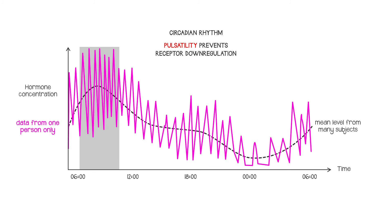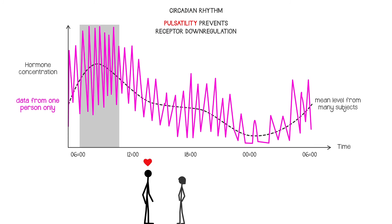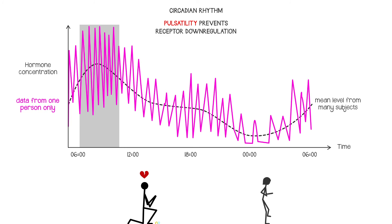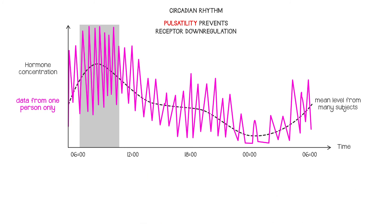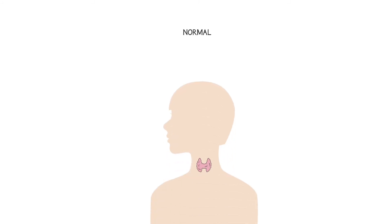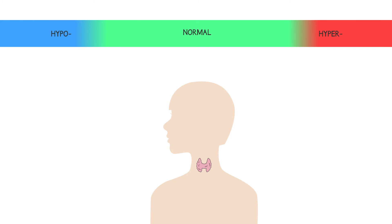But of course, if a particular event occurs which demands an increase in hormone production, levels can be increased on top of that baseline. Hormone levels have to be carefully controlled — if that control goes wrong and hormone levels get too high or too low, this can lead to clinical problems.